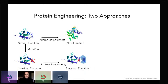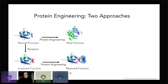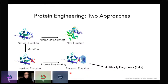There are two general approaches in the Rauf lab. In one approach, a normally functioning protein acquires a mutation, resulting in impaired function — typically an enzyme associated with a disease. We use protein engineering to restore that function using antibody fragments, or FABs, which we engineer to interact with the impaired protein to restore activity. I won't focus on that today, but it's a key aspect of the lab's research.